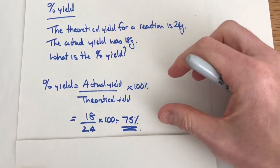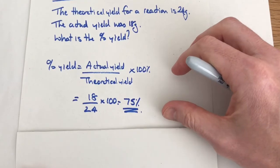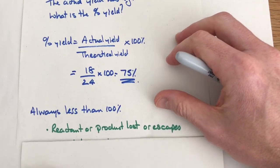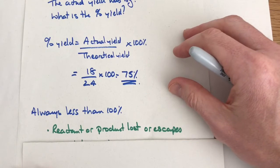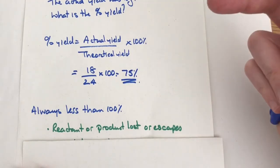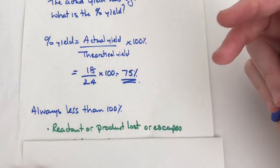Why is it always going to be less than 100? Three reasons. First reason is that during a chemical reaction you could lose the reactants or products. They could escape and therefore your percentage that you achieve will be less.